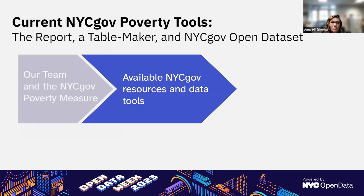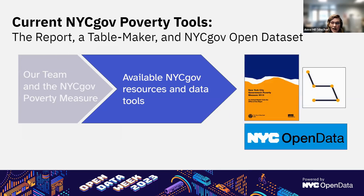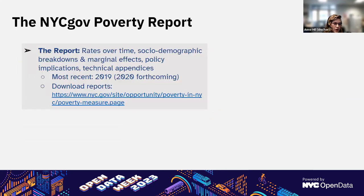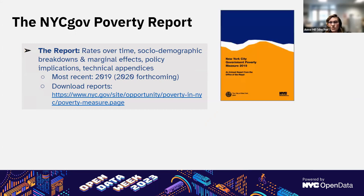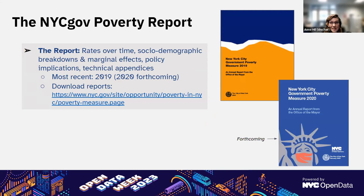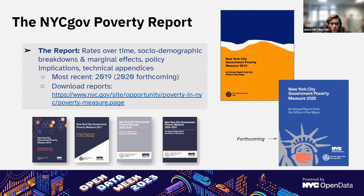Now I'm going to tell you about the various ways you can explore NYCGov poverty data. Our team currently has three main tools: a report, an online table maker, and the open data set. For the report, we produce one each year. Our data are based on census data that's lagged by a few years, so currently the most recent public report is for 2019. The 2020 report is done — we're just waiting on release details. You can go to the site in the slides to download prior reports.